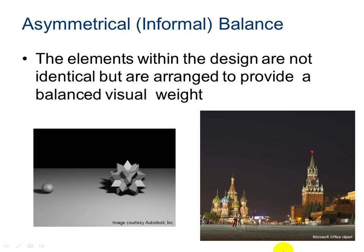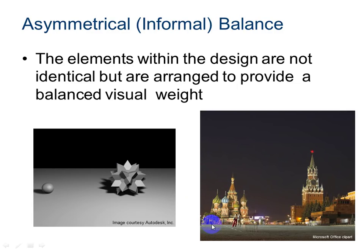Another type of balance is asymmetrical or informal balance. The elements in the design are not identical, as seen in this picture on the left, but are arranged to provide a balanced visual effect. The image of Red Square over here on the right illustrates asymmetrical balance, because the larger structure is closer to the center, while St. Basil's Cathedral in the background is a smaller visual weight and is farther from the center of the image.